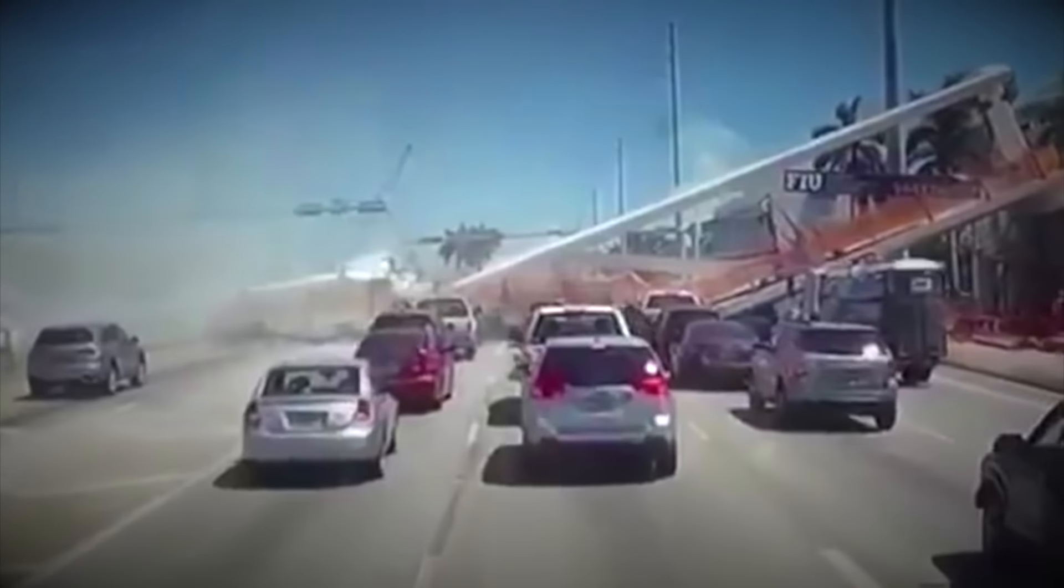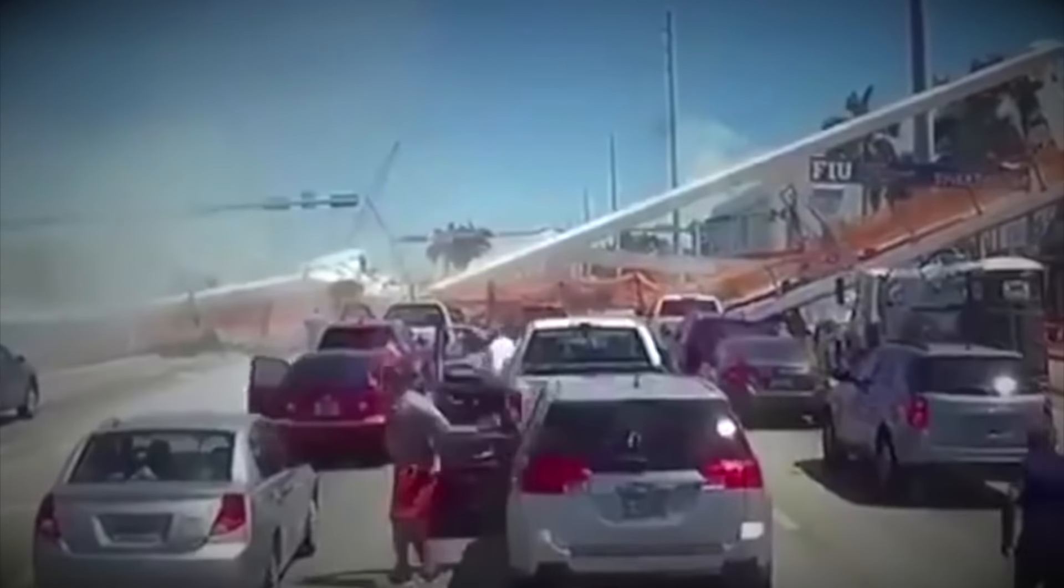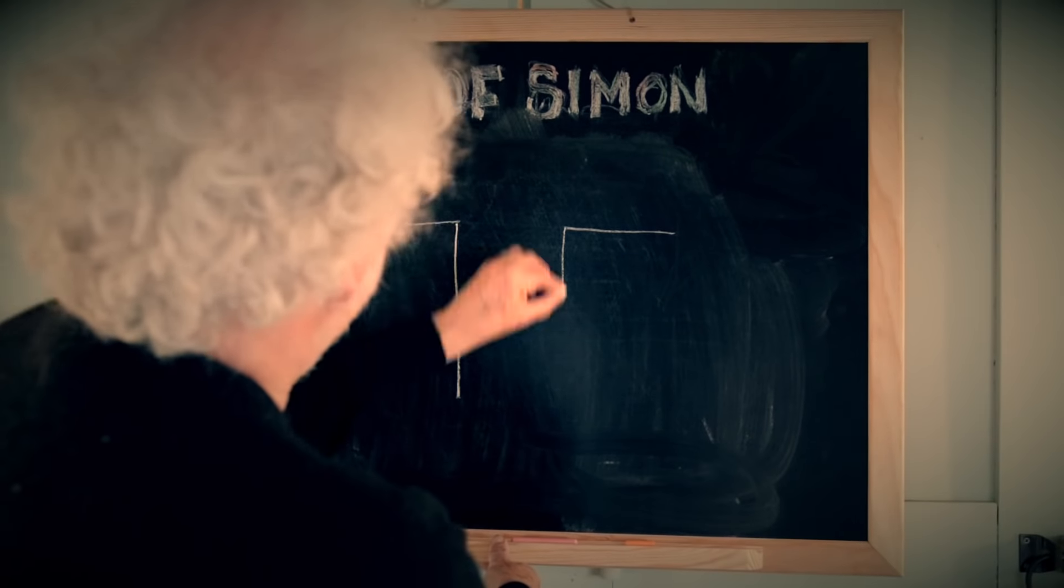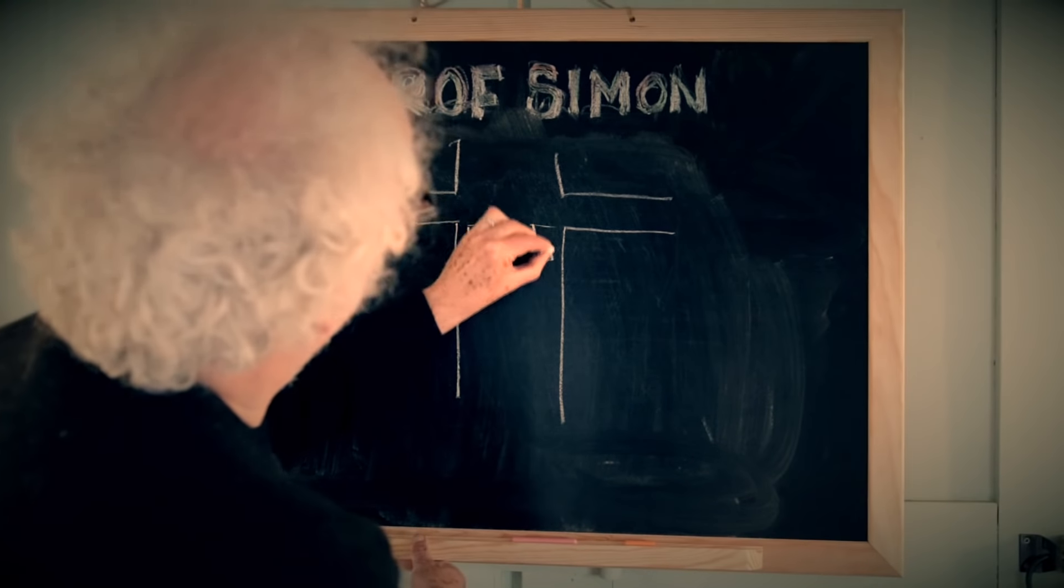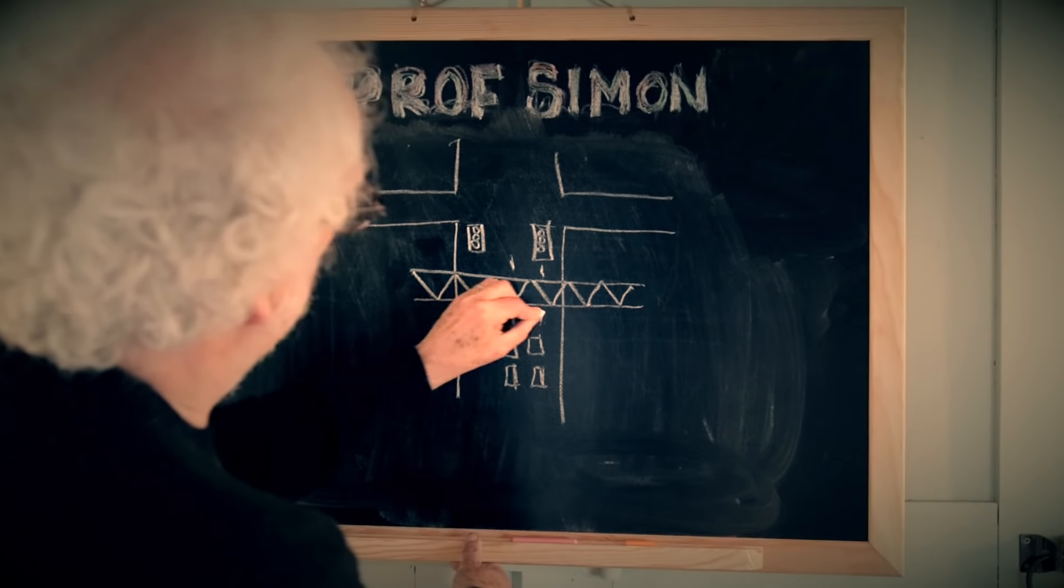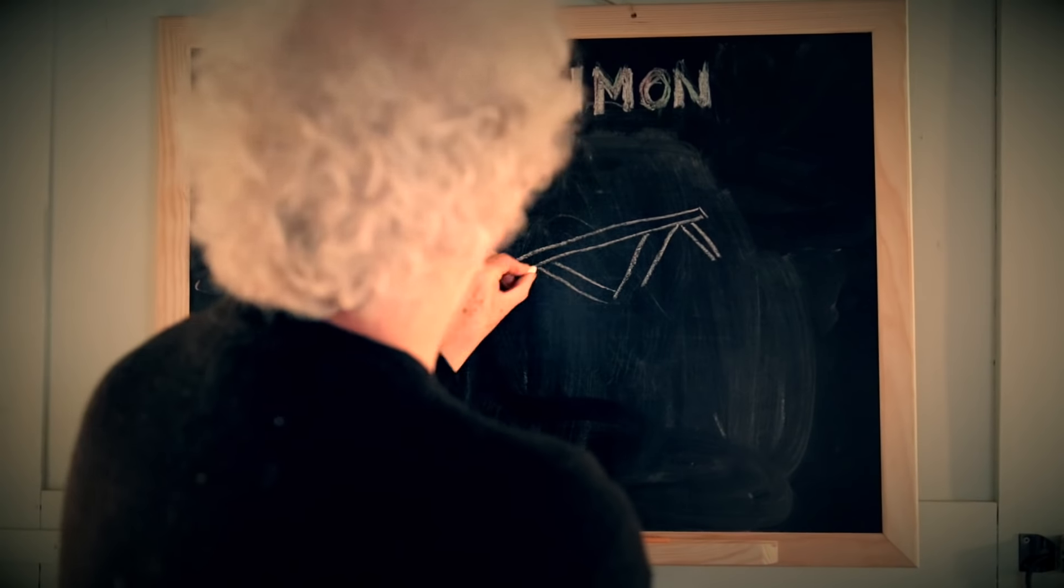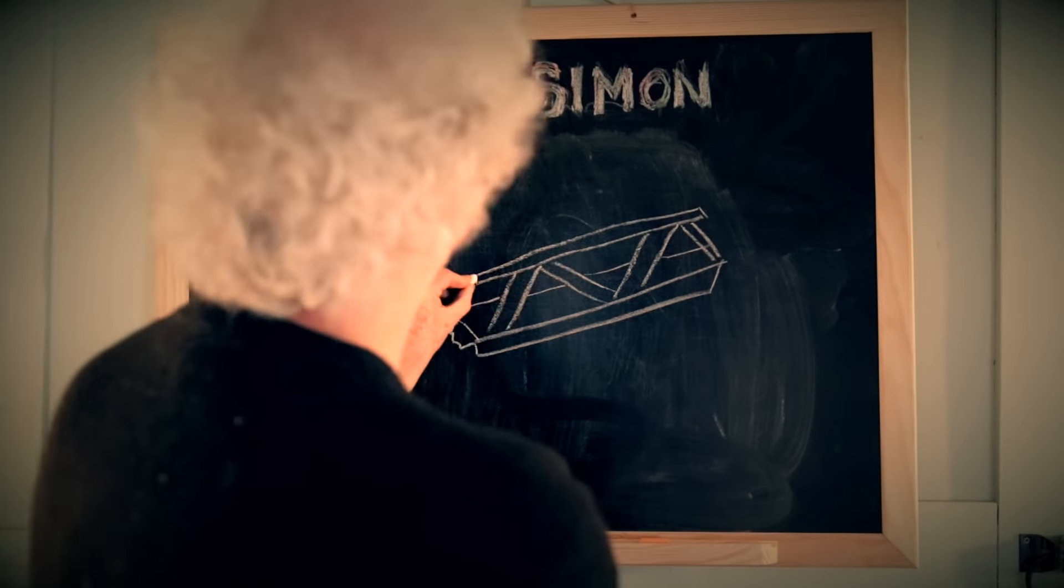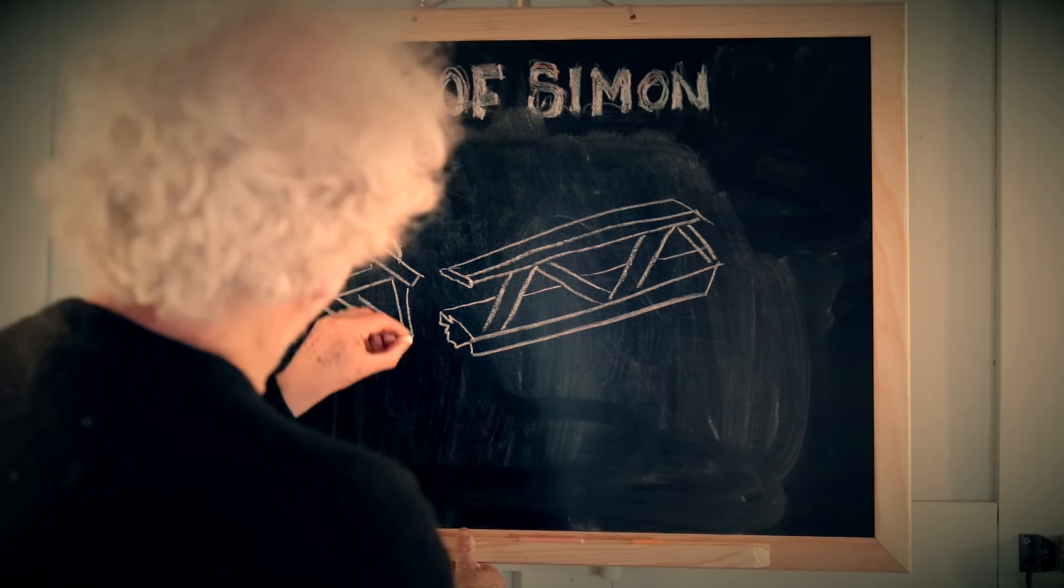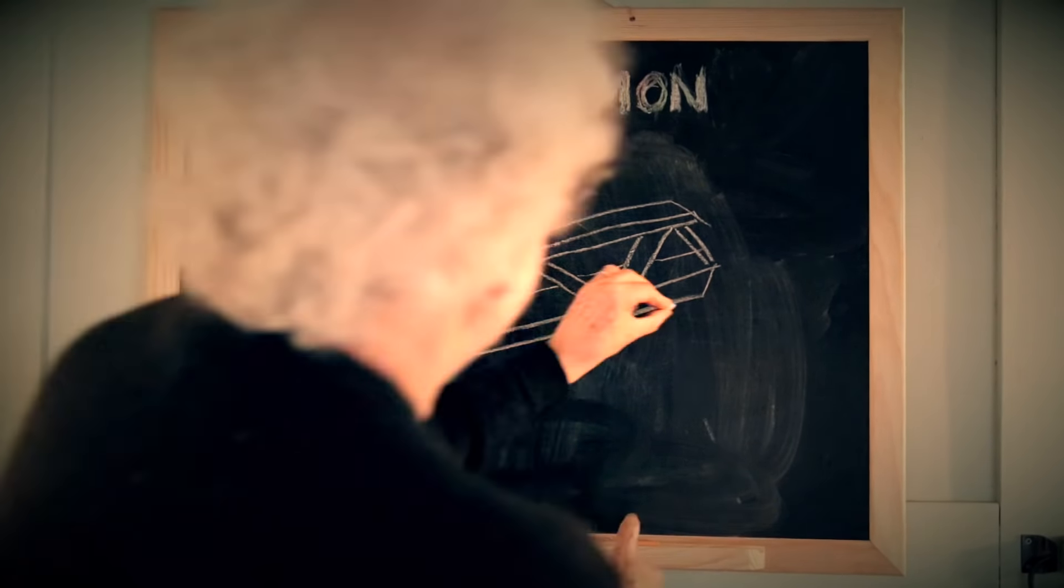To know why there were so many casualties, you have to understand the layout of the road. Just past the new bridge construction is a traffic junction with lights. When the bridge broke, traffic was stopped backed up at a red light. So with no warning and nowhere to go, cars were crushed under the weight of the bridge collapse.